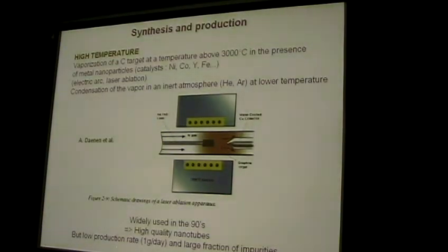In CVD you use hydrocarbons — for example ethylene — and you have decomposition of this ethylene at the surface of metal nanoparticles, at temperatures much lower than with the previous technique. You can grow nanotubes and control their growth on a substrate, producing very nice structures. A very interesting advantage of this technique is that it is scalable, and also you have production of a very small amount of impurities.